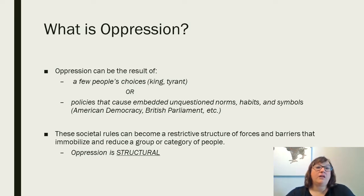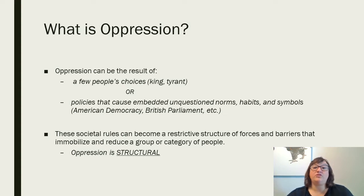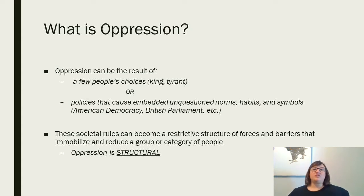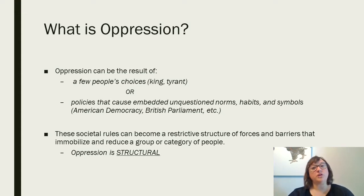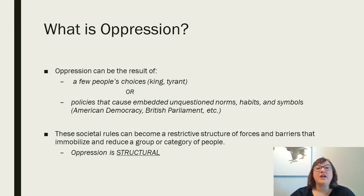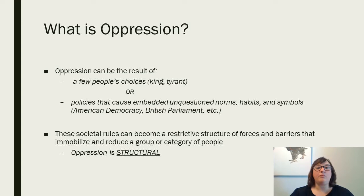Oppression, for Young, can be the result of either a few people's choices — a king or a tyrant — or policies that cause embedded, unquestioned norms, habits, and symbols. For instance, under American democracy or the British parliamentary system. These societal rules can become a restrictive structure of forces and barriers that immobilize and reduce a group or category of people. What's really important to understand is that oppression is structural — it's not one person over another. It has these norms, habits, symbols, and different ideas that make oppression what it is.